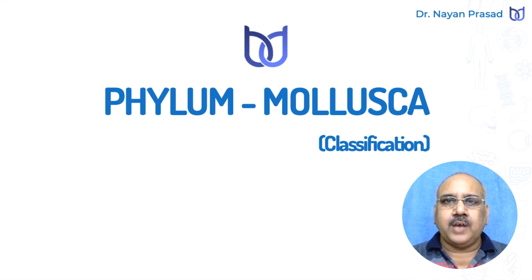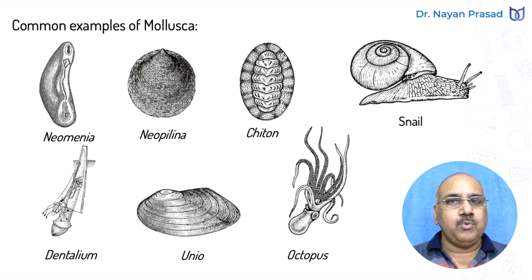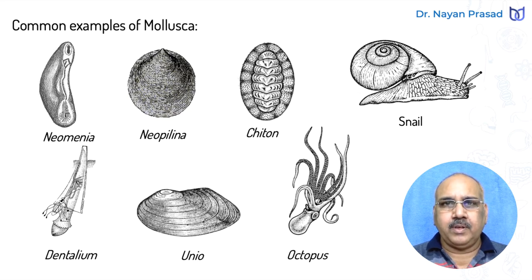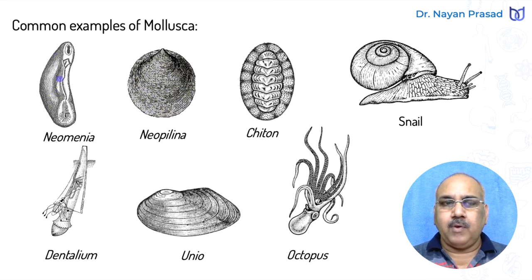Phylum Mollusca is the group of soft-bodied animals. These are unsegmented animals in which we see an outer protective shell in most cases. Here are some examples of Phylum Mollusca. Remember these examples. One is Neomania. Neomania has no shell in its body. The body is elongated worm-like. However, the body is soft and unsegmented also.